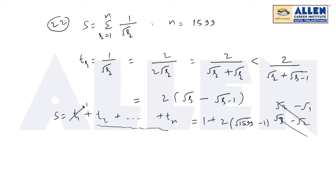So upon simplification it will get root under 1599 minus 1. Now that will be less than if I replace 1599 with 1600, it will be greater than that one. So it means 1600 square root we know is 40. So 40 into 2, 80 minus 1, that is 79. So S is less than 79, that we get the upper limit.